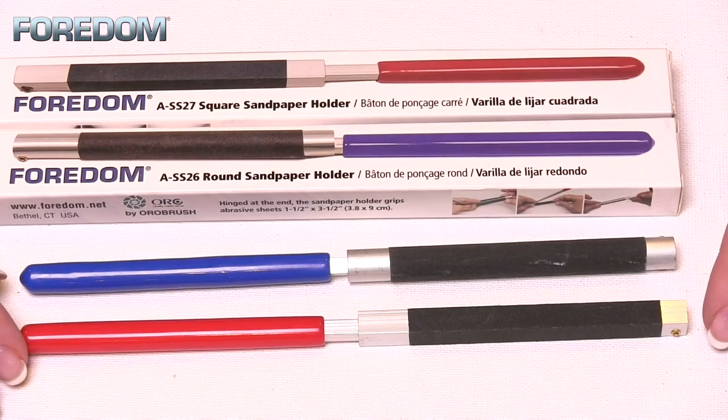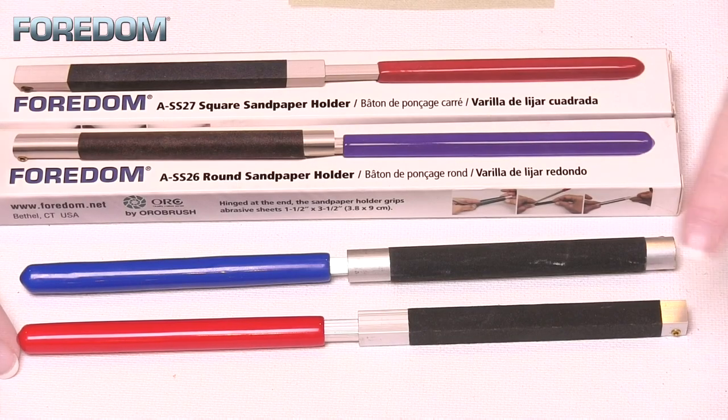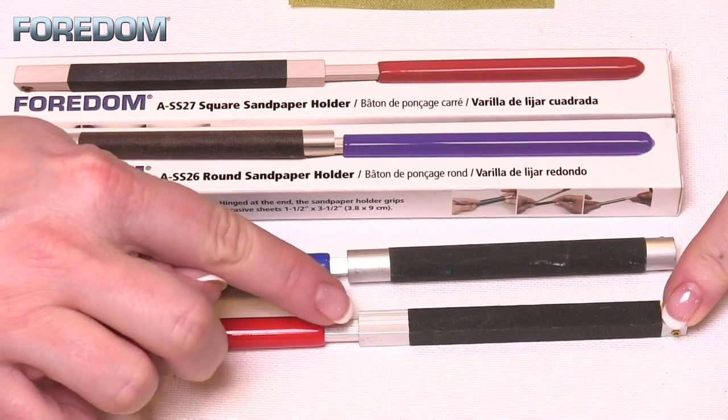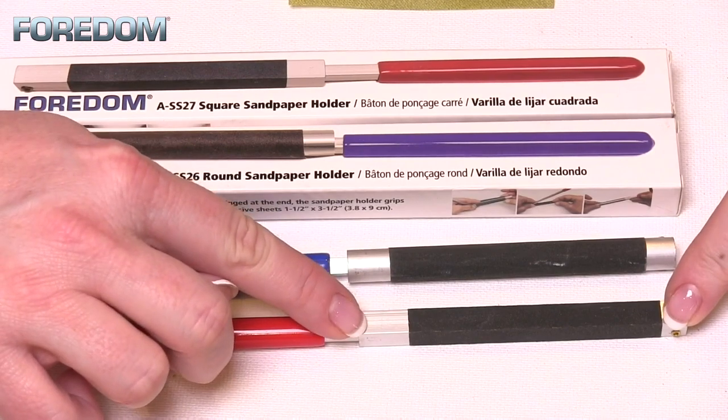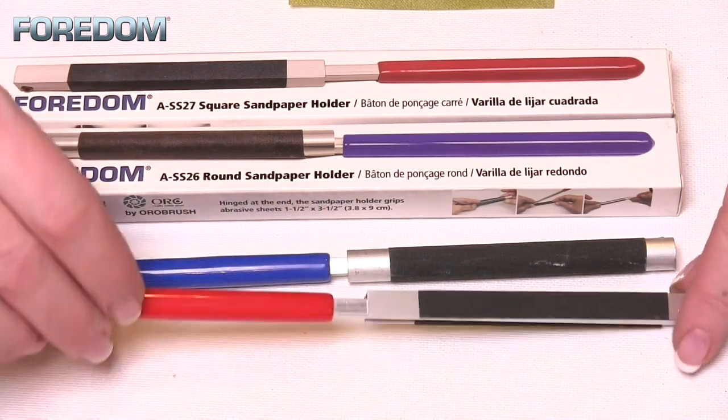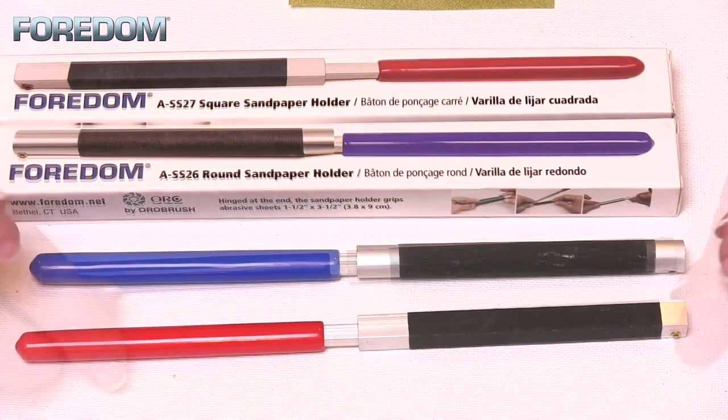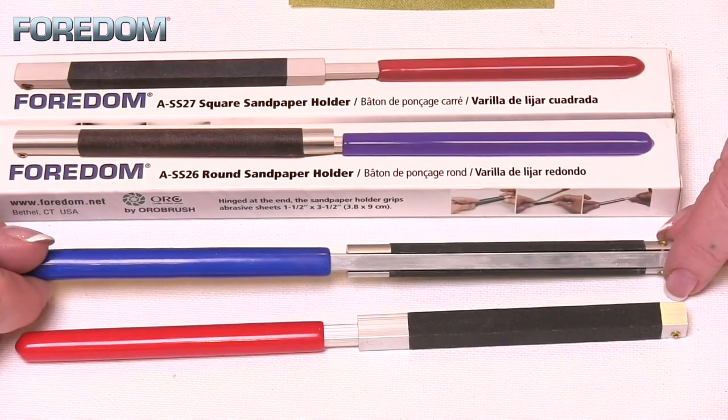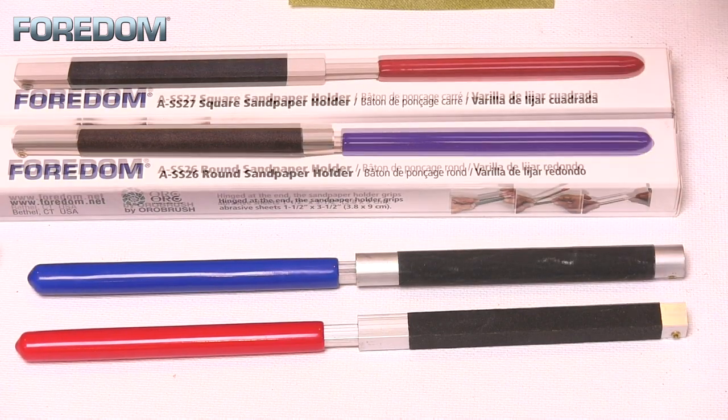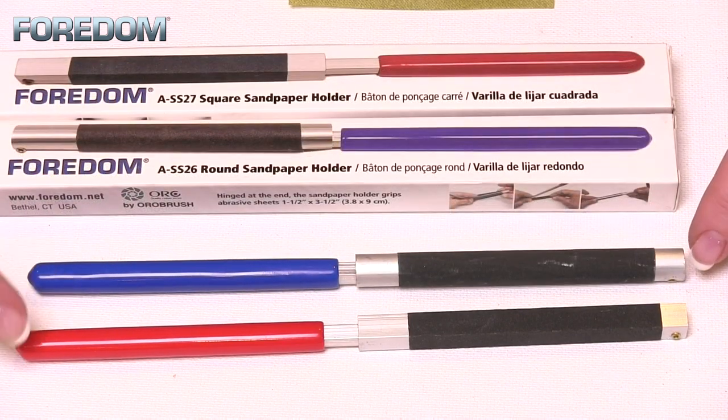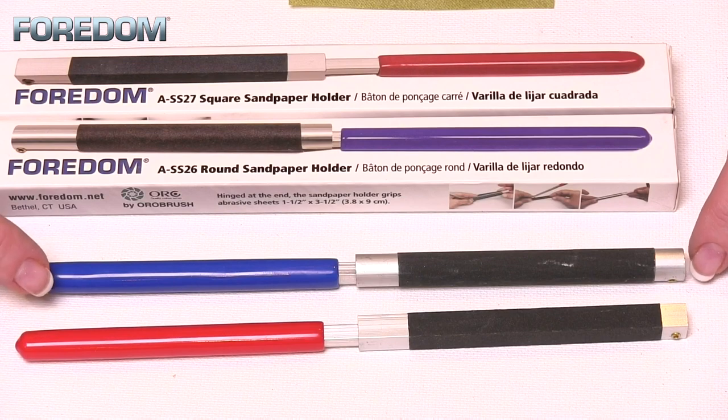a look at that now. Both of these sanding sticks are eight inches long and can each take up to three and a half inch wide pieces. In this case, we have the square, which is going to give me three surfaces to sand. We also have a round option in the same configuration. Another thing I really like about these is the colored handles, which allow for easy identification.